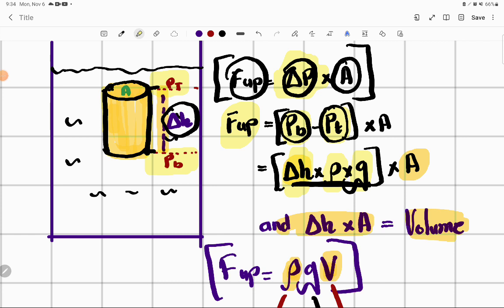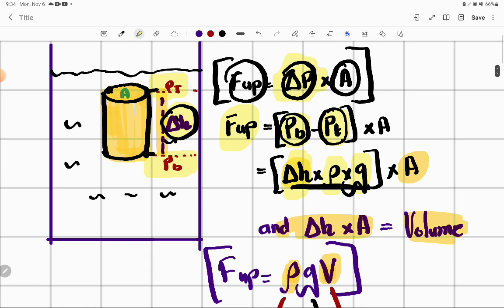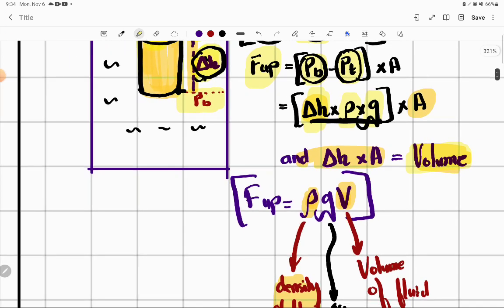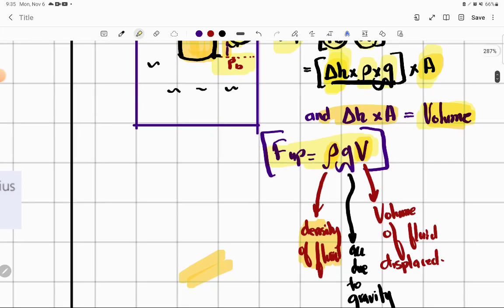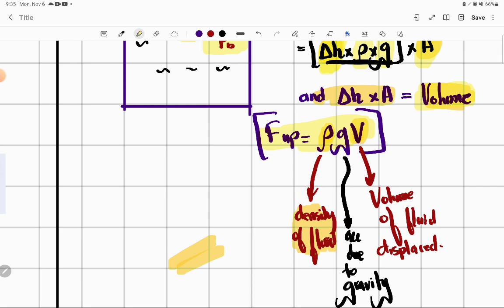We know that liquid pressure is h ρ g. I know that density and gravity remain constant, only the difference is in height. Can we write this as delta h into ρ g? Yes. Finally we reached here, I only found there was a height difference. Then I realized that if I take this area and multiply cylinder's area by delta h, what will come? Volume will come. Volume of this cylinder. I wrote it here as volume.